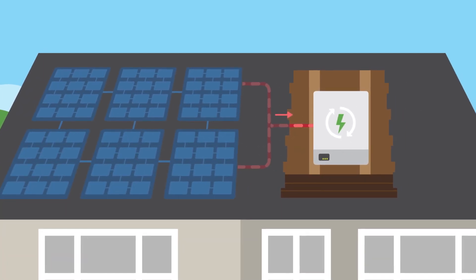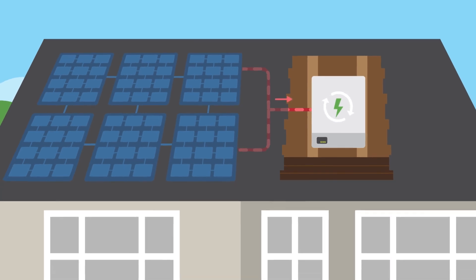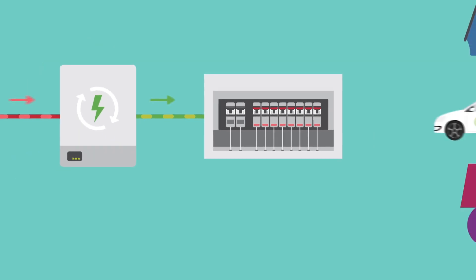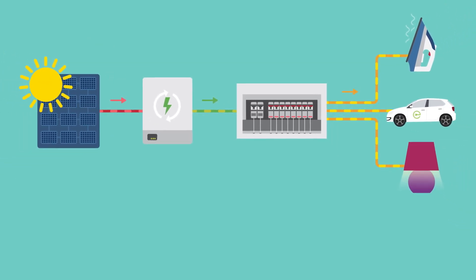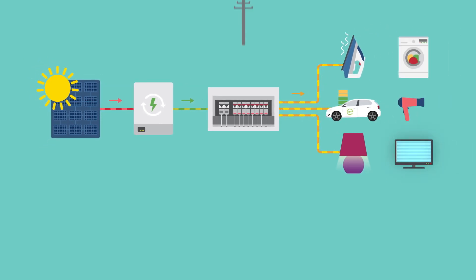The electricity that is generated passes through an inverter, which converts it into a usable form. From the inverter, the electricity flows to your fuse board and is consumed by the appliances in your home. When your home demands more power than your solar PV is producing, the balance is imported from the grid.